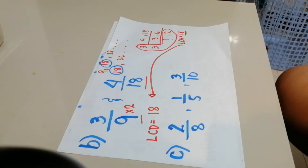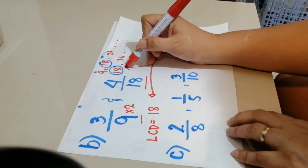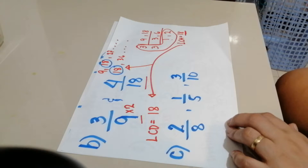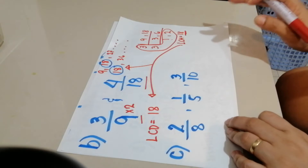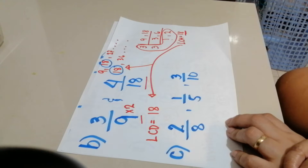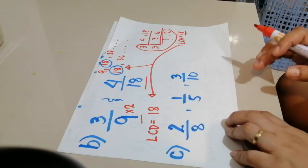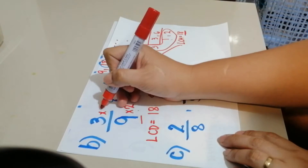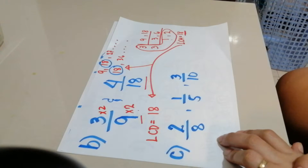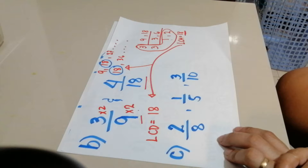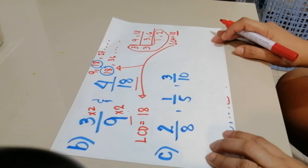The LCM is found by multiplying the numbers outside: 3 times 3 is 9, times 1 is 9, and 9 times 2 is 18. So the LCM is 18, which equals the LCD. Whether using listing or LCM, we get the same answer of 18. When you multiply the denominator, remember to multiply the numerator by the same number.